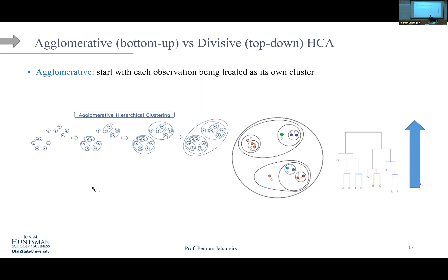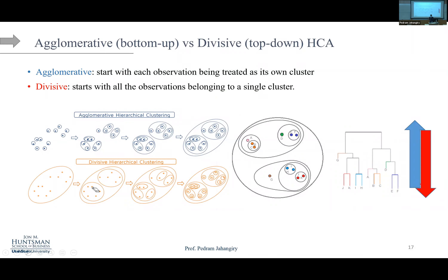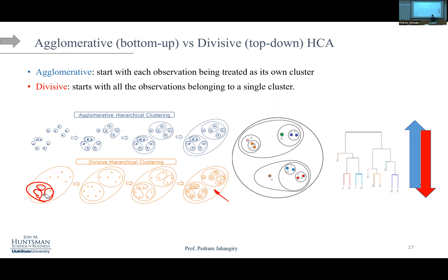In agglomerative clustering, you start from the bottom — each observation is its own cluster — and work upward, merging clusters step by step. In divisive clustering, you go the opposite direction: start with all observations in one cluster and break them down. At the very bottom of the dendrogram, the threshold would mean each observation is its own cluster; at the very top, everything is one cluster.